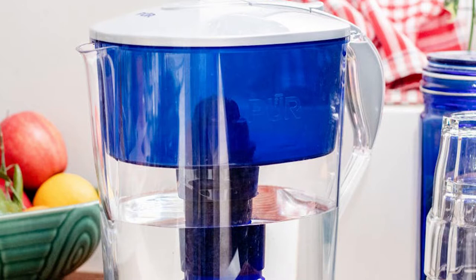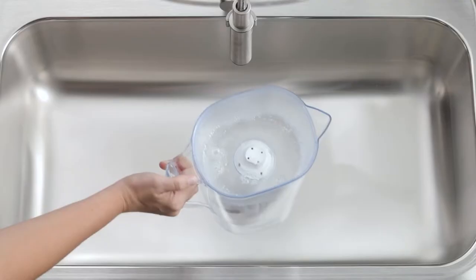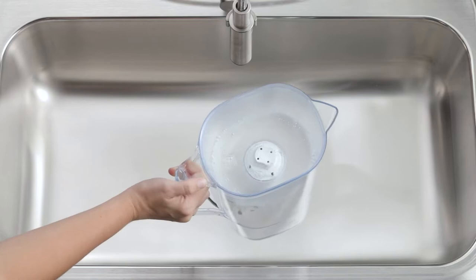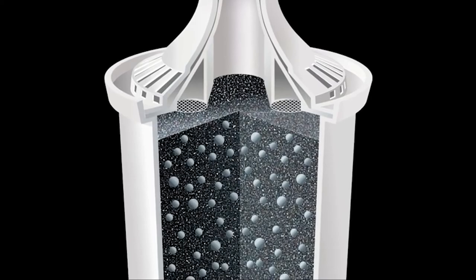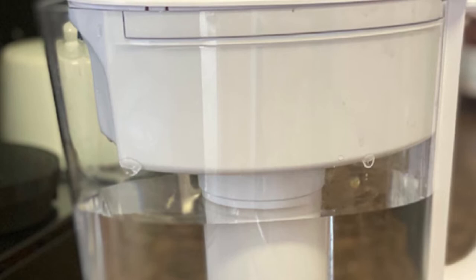For both Brita and Pur, we tested the most basic pitcher and the pitcher one step up from the most basic pitcher. For Brita, these pitchers were the Everyday 10-cup pitcher and the Grand 10-cup pitcher respectively. For Pur, these pitchers were the Classic 11-cup pitcher and the Ultimate 11-cup pitcher. The two basic pitchers, the Brita Everyday and the Pur Classic, generally cost between $25 and $30, and they both include a standard filter with purchase, so there's no cost difference there.